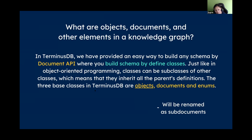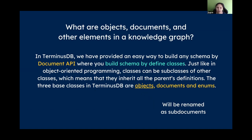Many potential users and developers aren't deep semantic graph nerds — they may know a little but aren't totally diving into it. So we wanted to make it more straightforward for developers. We changed the naming — objects, documents, and enums became sub-documents, documents, and enums. This matches version 10 and above.